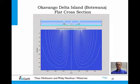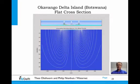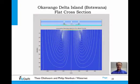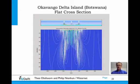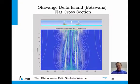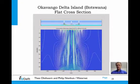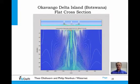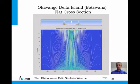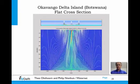Another example is an island in the Okavango Delta in Botswana. It's a flat cross-section — the island evaporates lots of water and attracts surface water from the surrounding area, which flows through the subsurface onto the island where it evaporates, creating this streamline pattern. Salt accumulates at the bottom below the island and causes density flow, giving interesting patterns and naturally transporting salt down to the bottom of the aquifer.